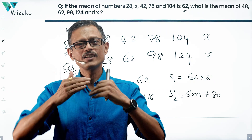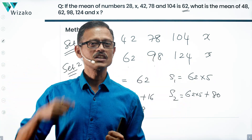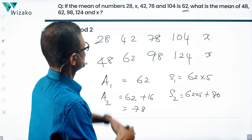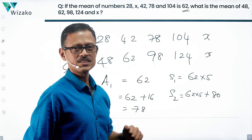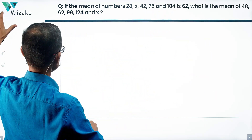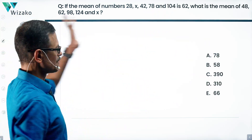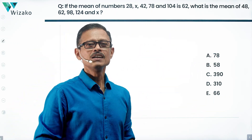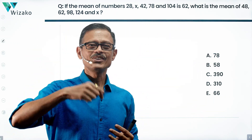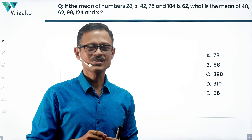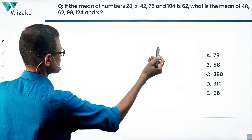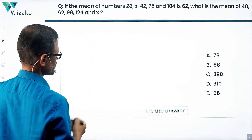This extra 80 is going to be divided equally among the 5 numbers, so the average is going to be 16 more than the old average. The old average is 62, so the new average has to be 78. Method 2 works only if the numbers happen to be arranged this way. But being switched on, if you realize this, you would get the answer in probably 30 seconds or even less. Choice A is the correct answer.